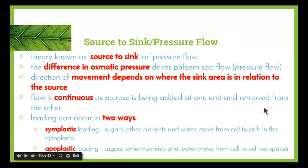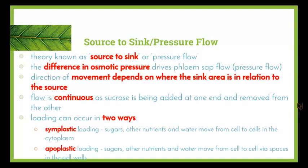In the source-to-sink theory, the source is where photosynthesis takes place — the leaves — and the sink is where the products of photosynthesis are required, such as a flower or a bulb that needs energy for growth. The difference in osmotic pressure drives the phloem sap flow, or pressure flow. The direction of movement depends on where the sink is in relation to the source, giving us that bidirectional movement. Flow is continuous if sucrose is being added at one end and removed from the other.